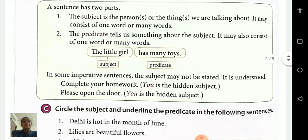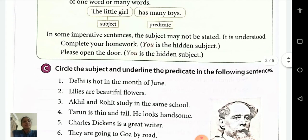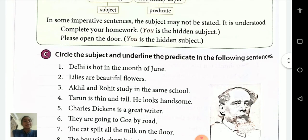In some imperative sentences, the subject may not be stated — it is understood. For example: 'Complete your homework' — here 'you' is the hidden subject. Similarly, 'Please open the door' — 'you' is the hidden subject. Now let's see Exercise C.